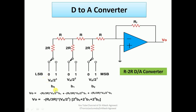For a three-bit R2R DAC, the reference voltage equivalent for B0 (LSB) is VR/2³ — the least value. The intermediate bit B1 has VR/2², and the MSB B2 has VR/2¹. For the LSB arm, since R and 2R are in series giving 3R, the contribution is −RF/3R × (VR/2³) × B0. For the middle bit: −RF/3R × (VR/2²) × B1. For the MSB: −RF/3R × (VR/2¹) × B2.